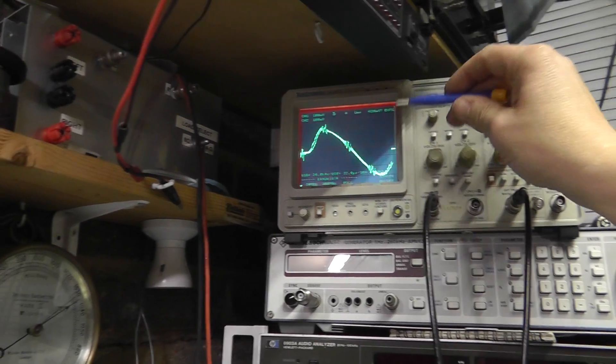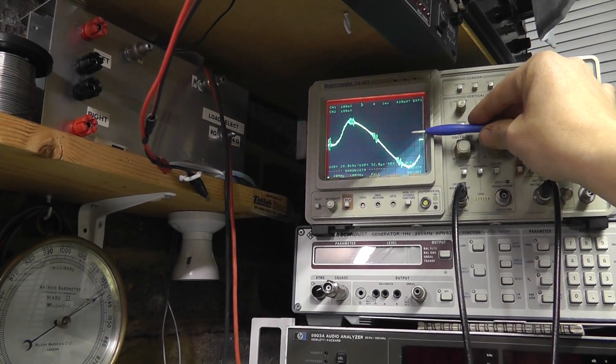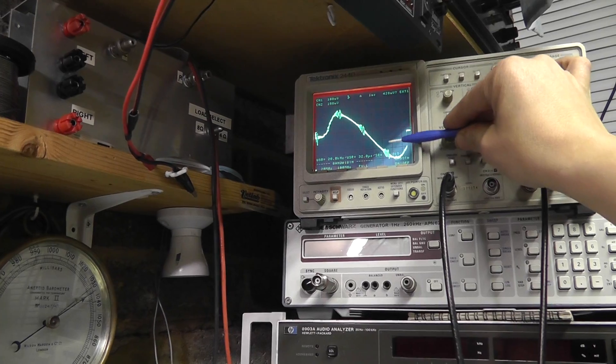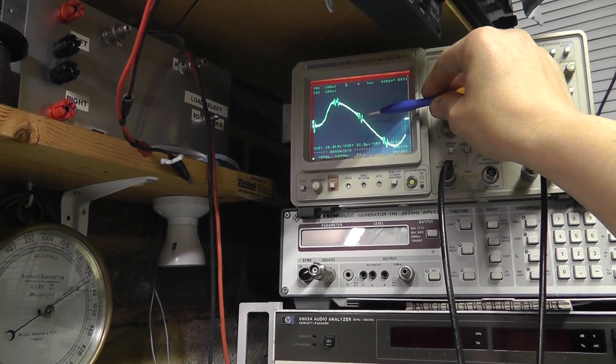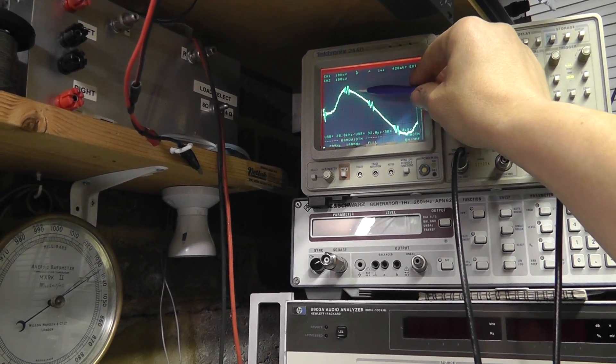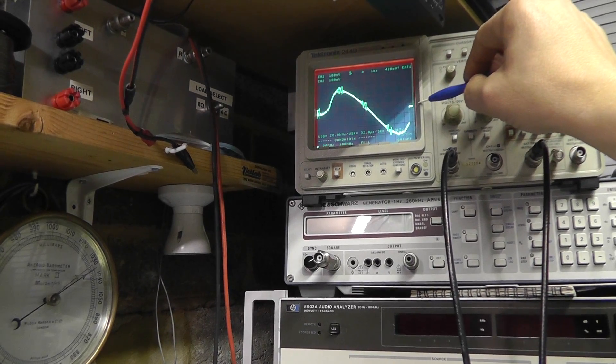So basically what we're doing is we're sweeping either side of the passband below and above. And the diodes are... One diode is conducting this way and the other diode is conducting the other way.